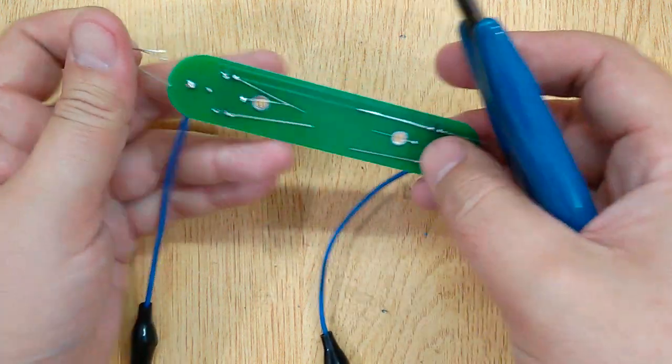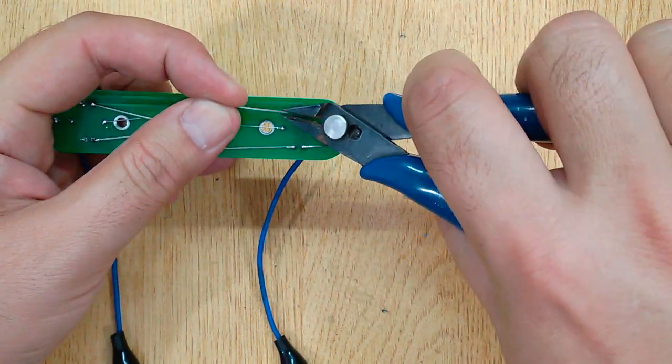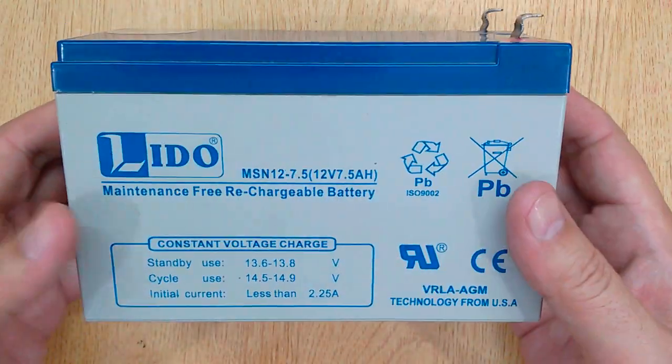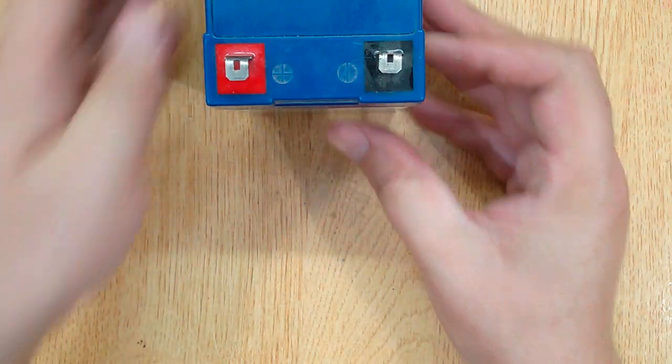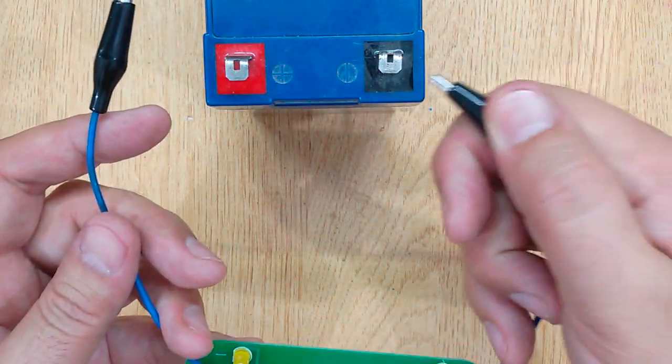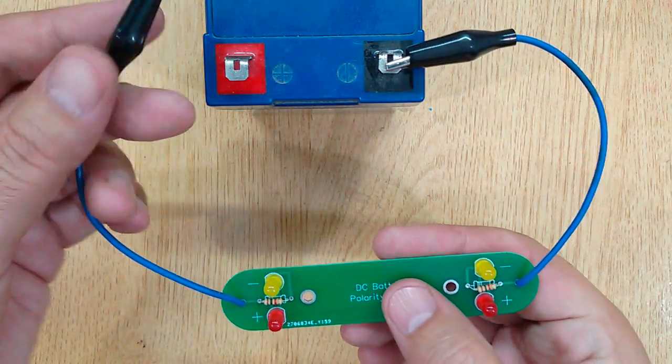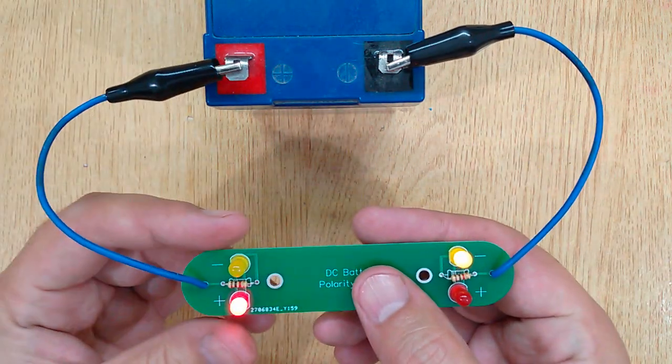Now, remove the extra pins using a wire cutter. Let's test it. This is a 12 volt DC battery. Let's test its polarity by connecting the alligator clips with the negative and positive terminals of the battery.